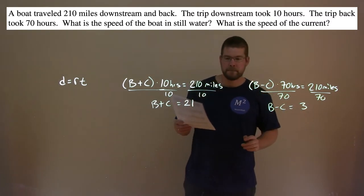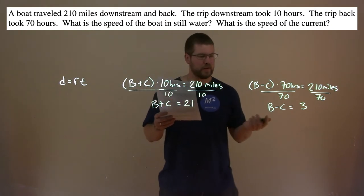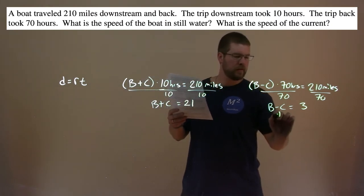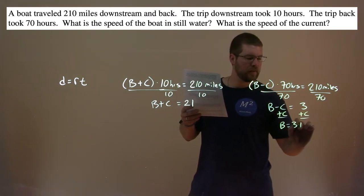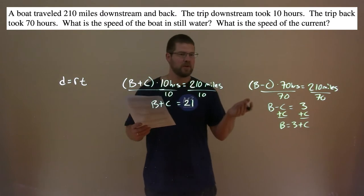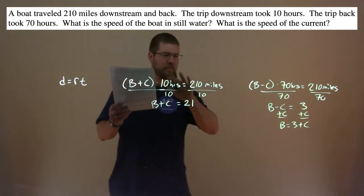So, B plus C is 21, and B minus C is 3. Makes it pretty easy. Let's get B by itself. We add C to both sides. And B equals 3 plus C. And just to note, a very complicated problem became pretty simple now, once we have planned it out right.